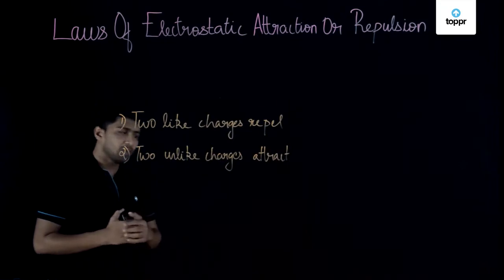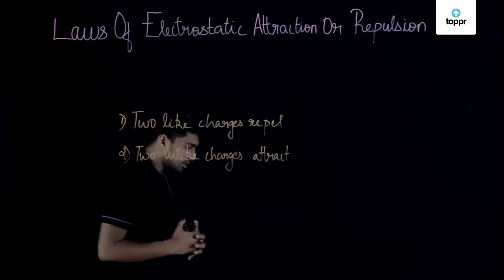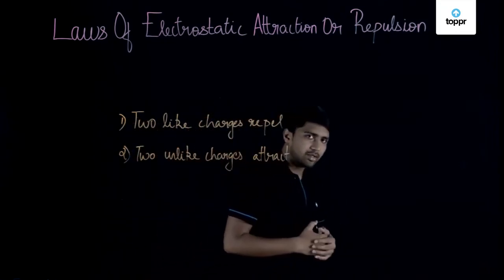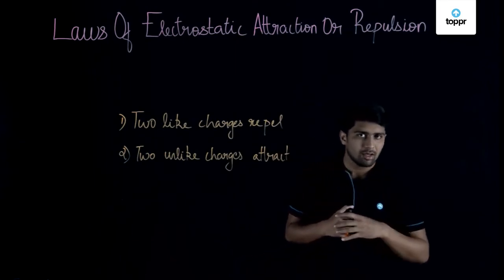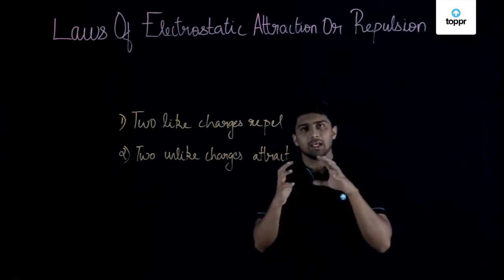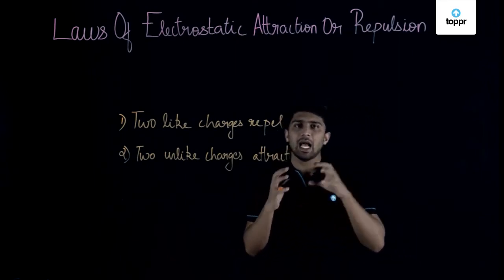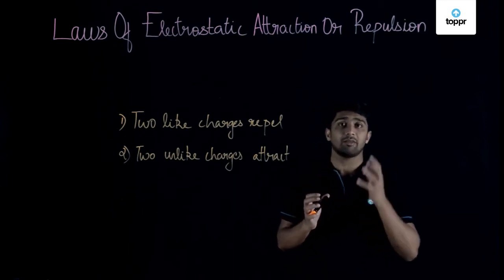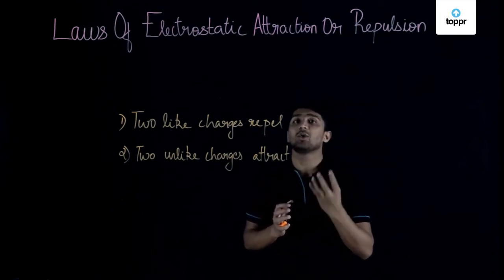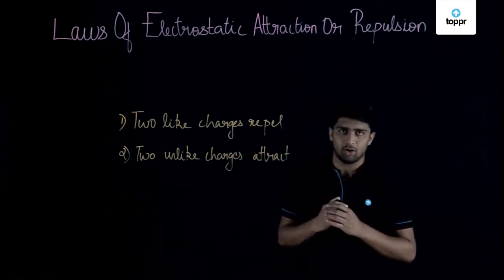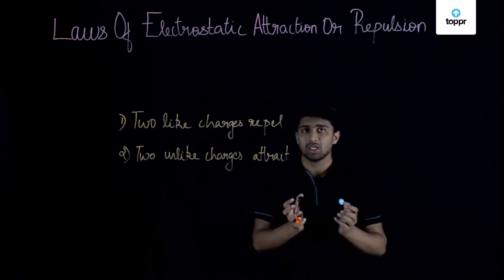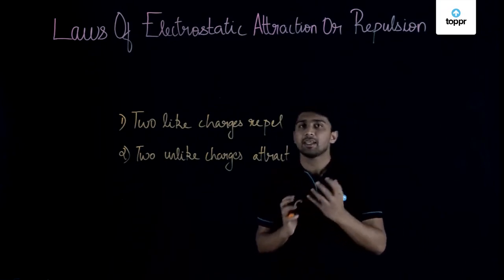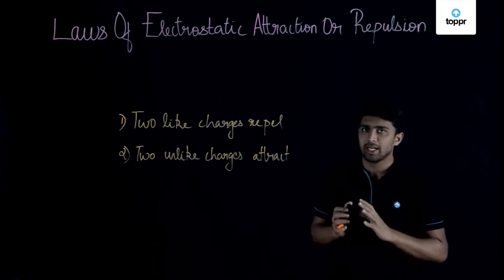We have already learned about the modern theory of static electricity, where we learned that a body will have a net charge as positive when it is donating electrons, and a body will have a net charge as negative when it is accepting electrons.